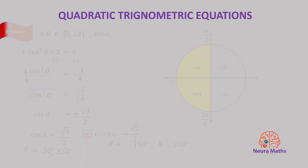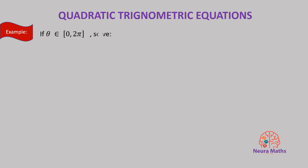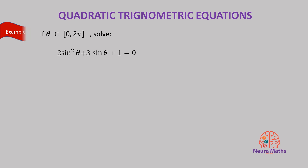Let's have a look at this example. Solving this trigonometric equation is the same as solving this quadratic equation. We can solve this quadratic equation by factoring, and the trig equation is solved in the same way. We factor sine squared into sine theta times sine theta, and then we look for two numbers whose product is 2 and whose sum is 3.